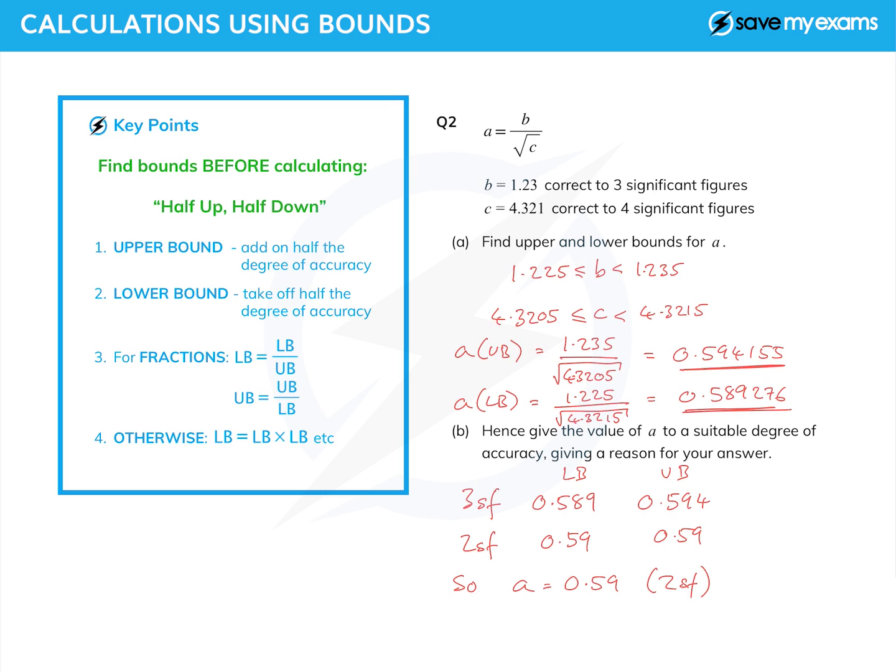Okay, so if you're ever asked to give something to a suitable degree of accuracy having found the lower and upper bounds, just keep rounding it until you find the same number for each.